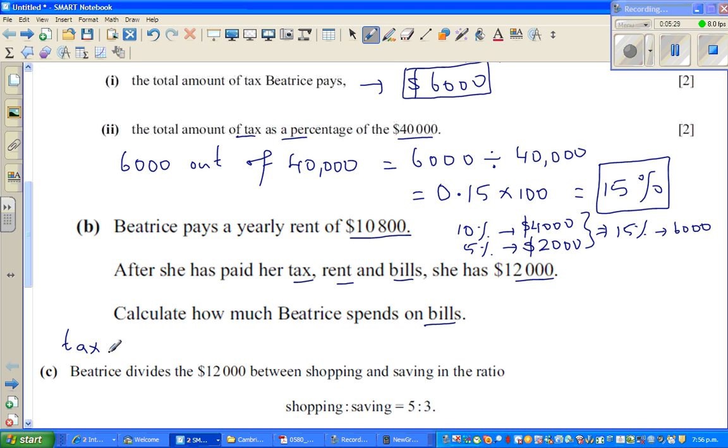So what's the tax? The tax, we have to add tax plus rent. Tax plus rent is $6,000 plus your rent is $10,800. So this is $16,800. So what they're saying is $16,800, which is tax plus rent, plus bill, plus she is left with this, plus $12,000 is equal to $40,000. Can you understand the equation?